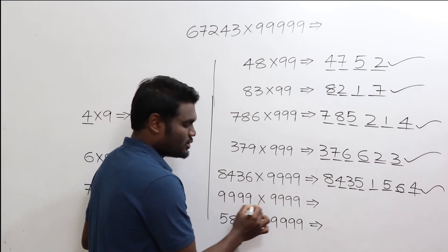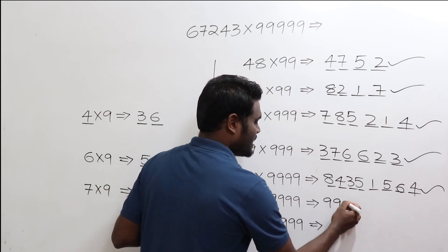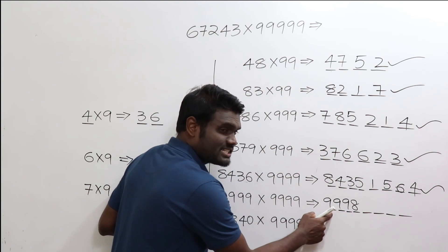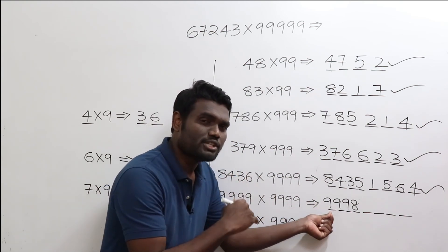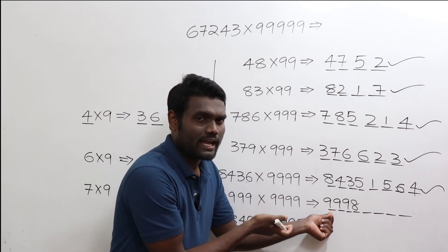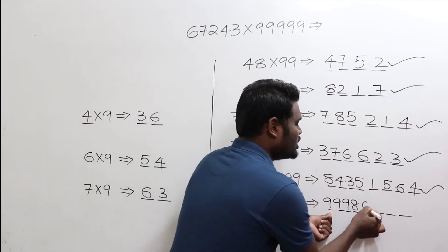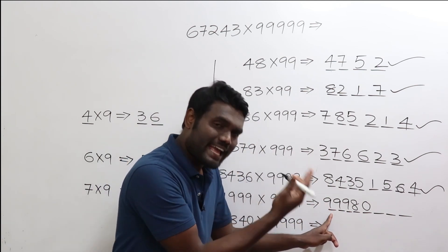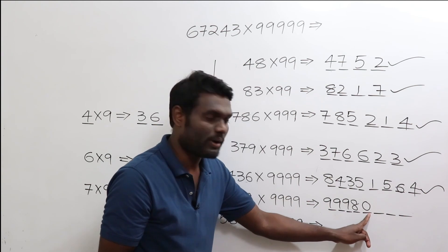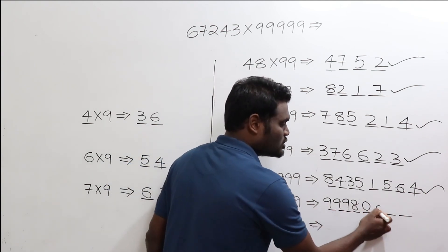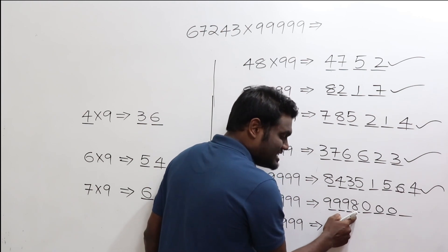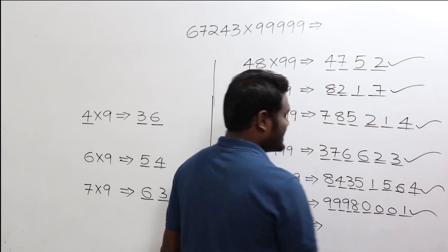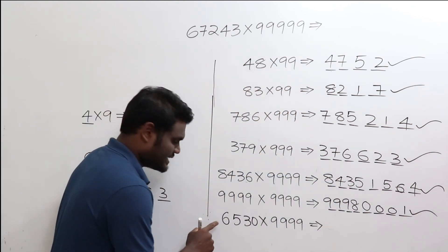Now 9999 times 9999. Reduce it by 1: this will be 9998. As you have four digits, you need four more digits. For 9, how much more to add to get 9? Since it is already 9, you just add 0. So the first three digits give 0, 0, 0. For 8, add 1 to get 9. So the answer is 99980001.